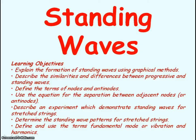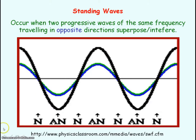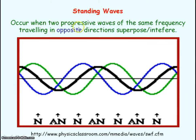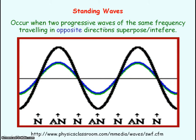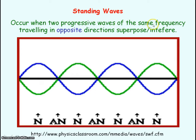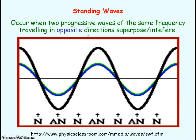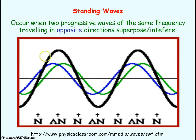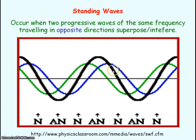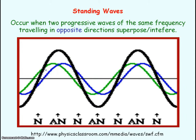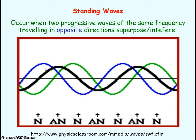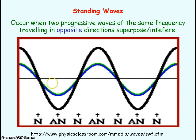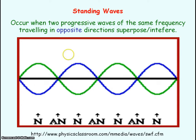We are going to be looking at standing waves, which are also known as stationary waves. Standing waves occur when you have two progressive waves — waves that are travelling — of the same frequency, moving in opposite directions. When they meet, they superpose or interfere with each other. Here you have a blue wave and a green wave of the same frequency travelling in opposite directions, and the black line represents the resultant of these two waves — the standing wave pattern being produced.